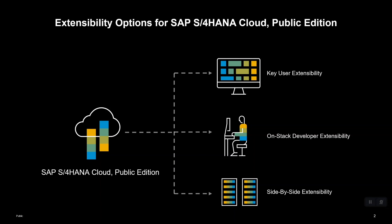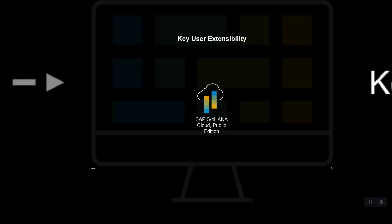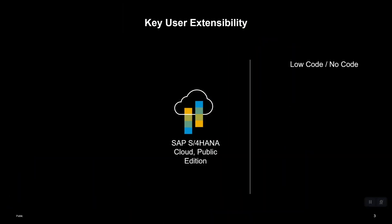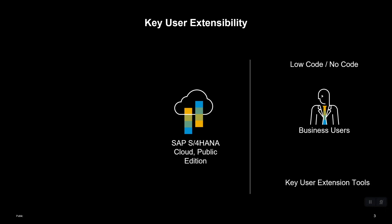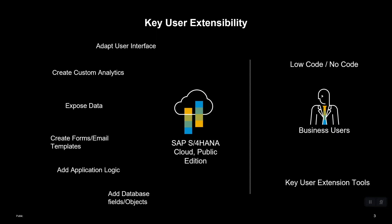First up is key user extensibility, which is a low-code, no-code approach that empowers business experts to add extensions to SAP S4HANA using key user extension tools and helps them make changes like adapting the screen layout, adding custom fields, etc.